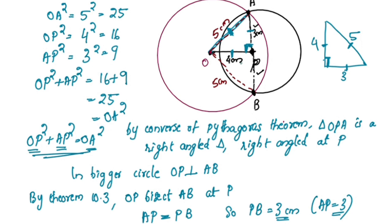3 plus 3 equals 6 centimeters. The length of the common chord AB is 6 cm. We will see you in the next video.